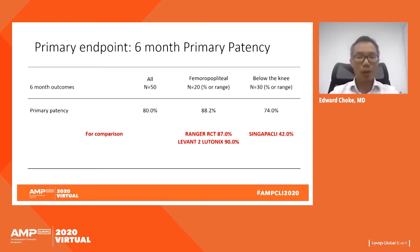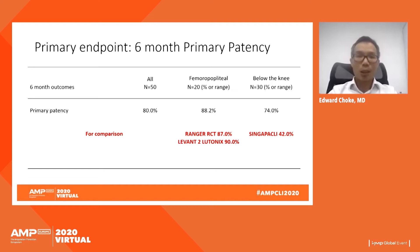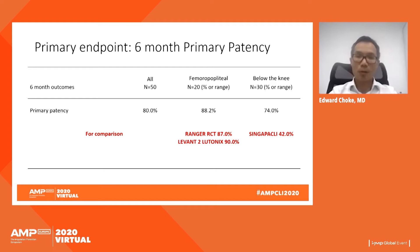For below-the-knee, the six-month primary patency was 74%. Compared to the IN.PACT paclitaxel drug-coated balloon for BTK, which had a six-month primary patency of only 42%, the sirolimus-coated balloon appeared superior — though again these are different trials and this should be taken as a generalized guide to the efficacy of this sirolimus-coated balloon.